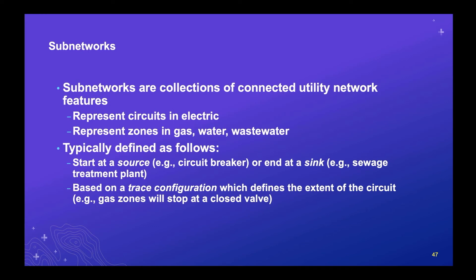Subnetworks are collections of connected utility network features — connected in a domain sense. For an electric utility, a subnetwork represents a circuit; for a gas or water utility, it represents a zone like a pressure zone or cathodic protection zone. Typically you start at a source — such as a circuit breaker — or end at a sink — such as a sewage treatment plant for wastewater. Subnetworks are typically based on a trace configuration that defines the extent of the subnetwork; for example, a gas zone stops at a closed valve.